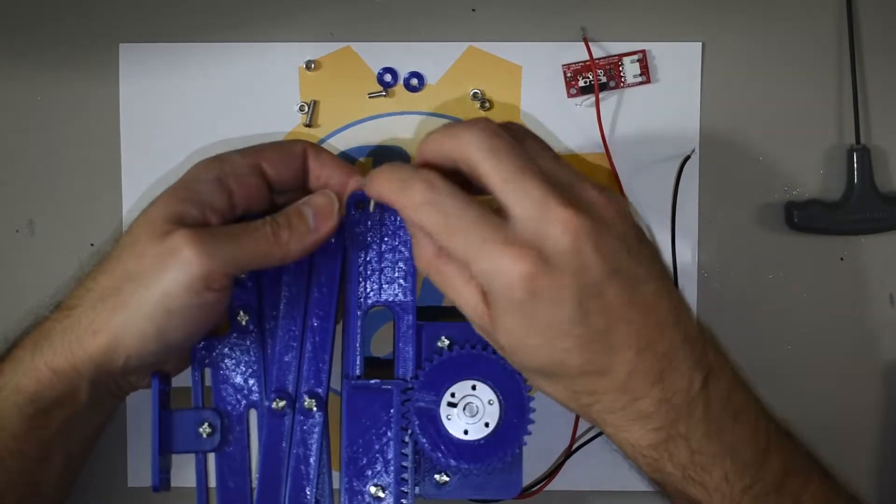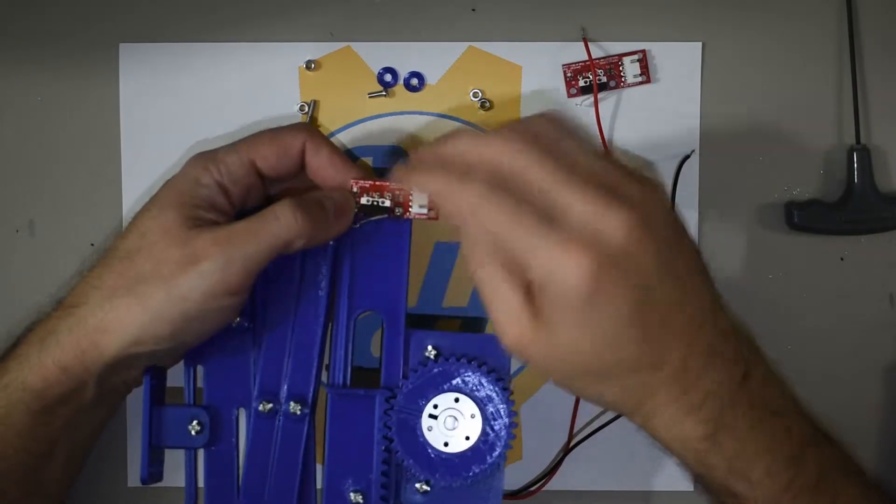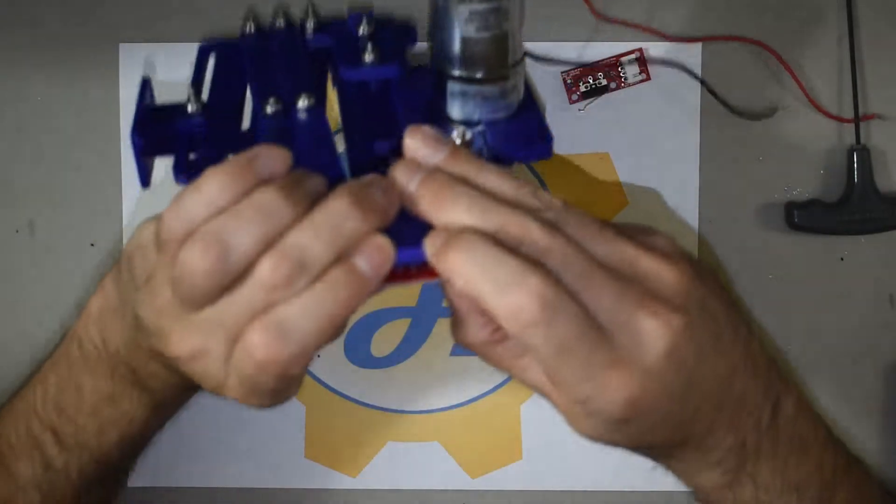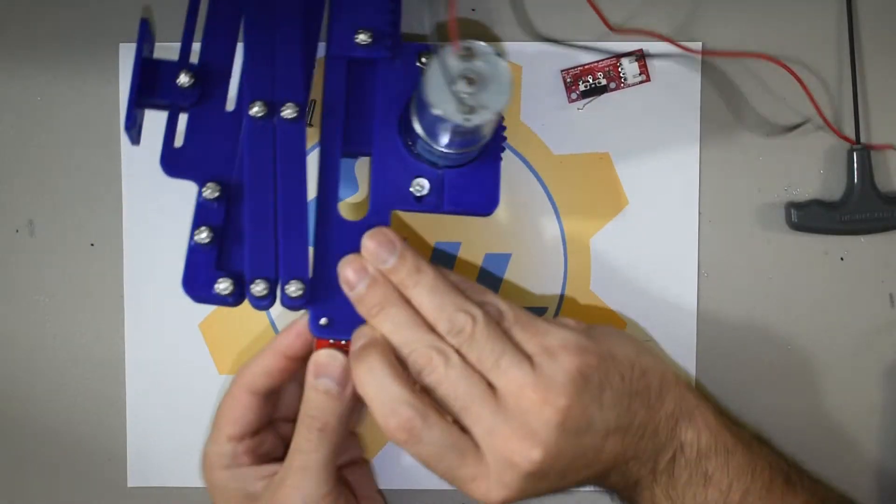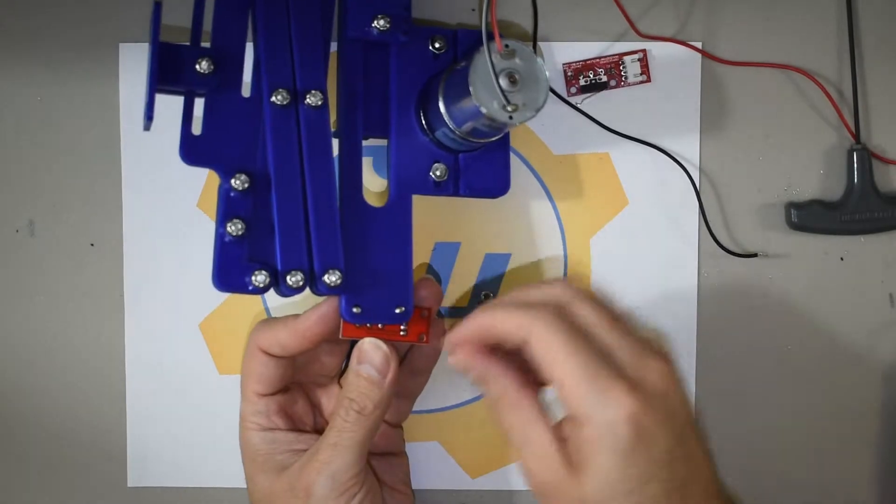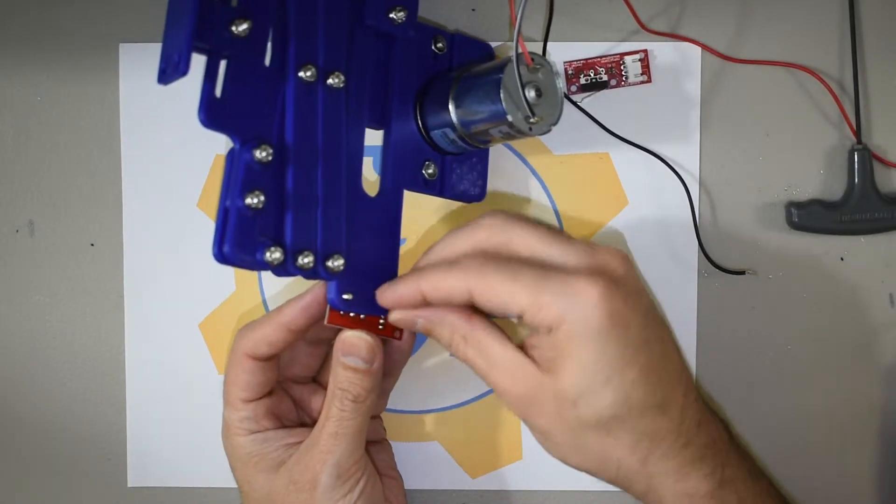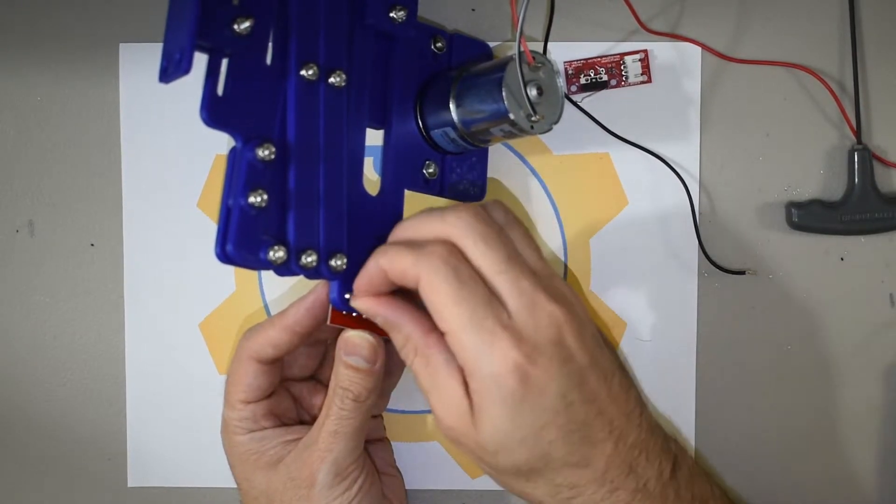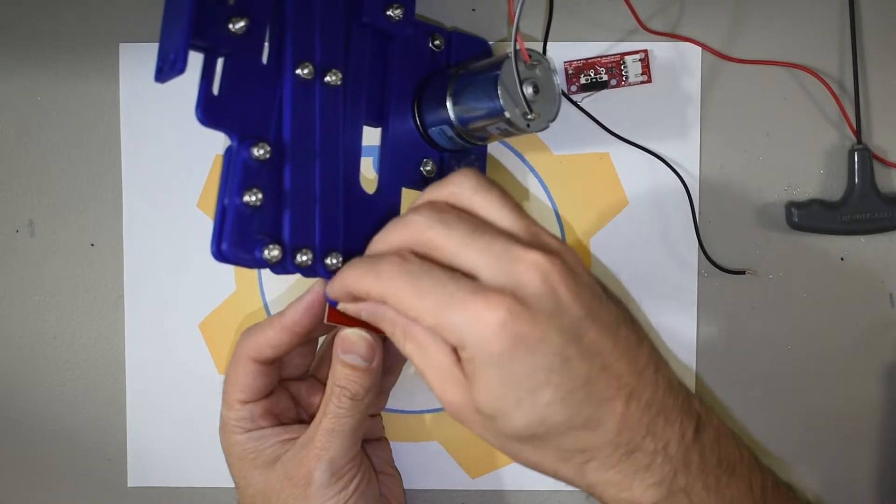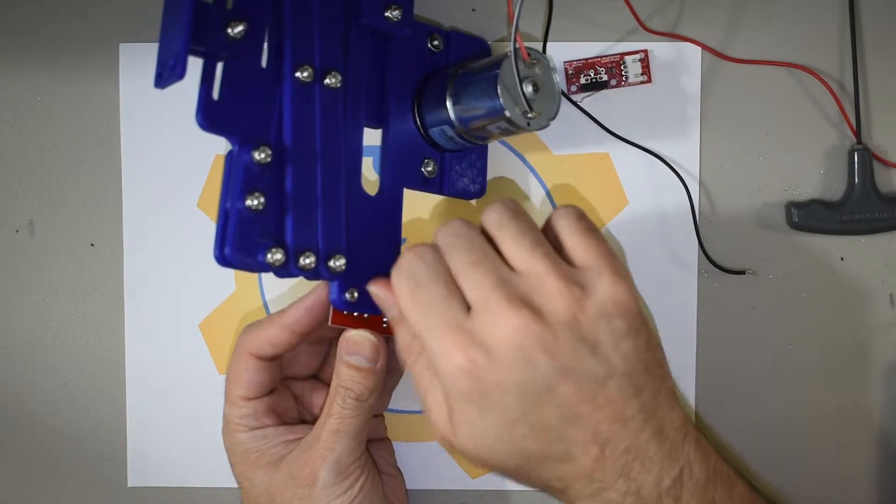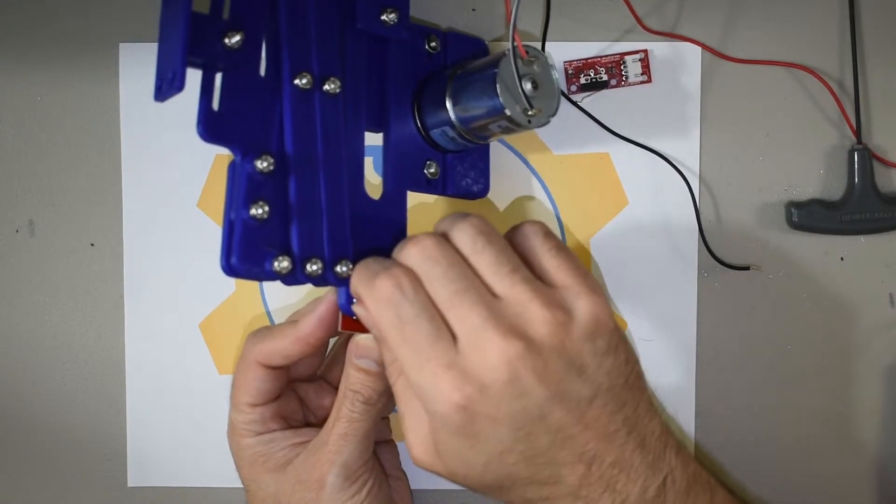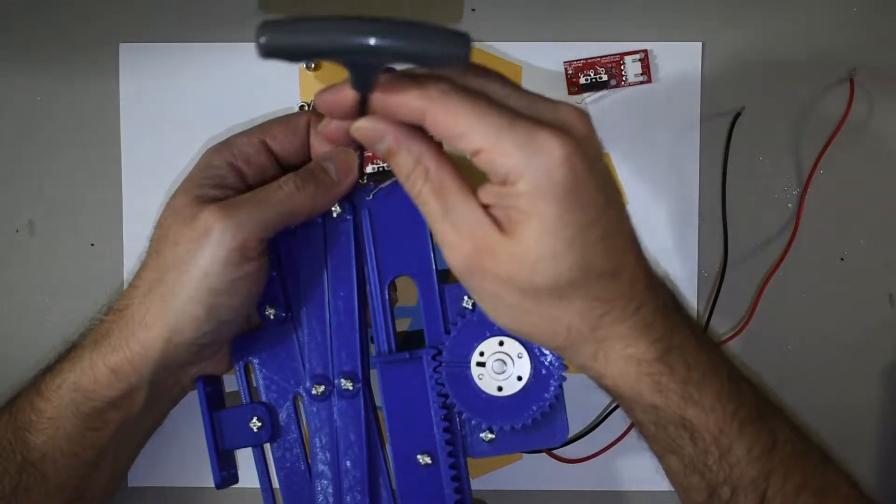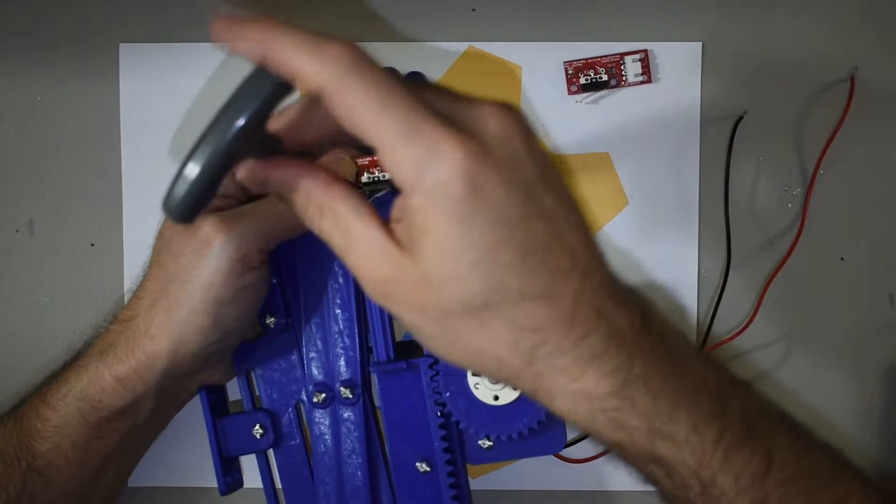So I'll put this one on top. It goes like this. Then on the back, of course you're going to put your nuts. Now these happen to be hex, so go ahead and tighten them just a little bit.